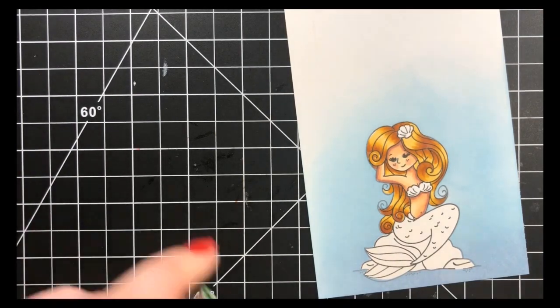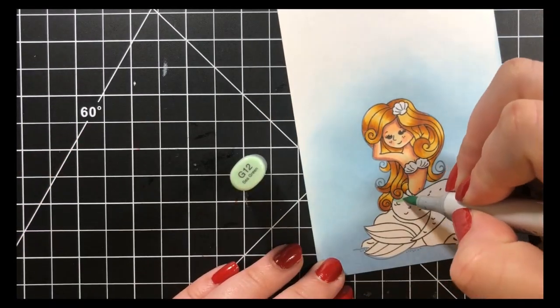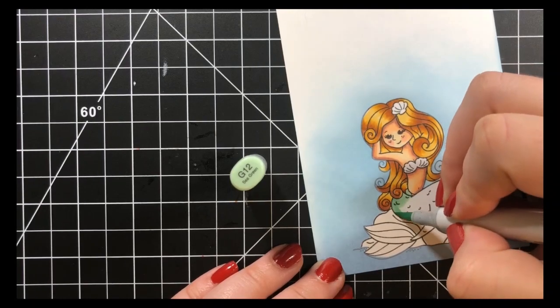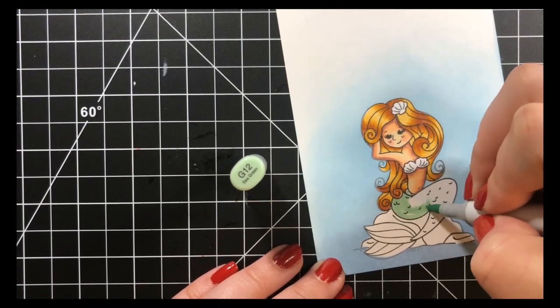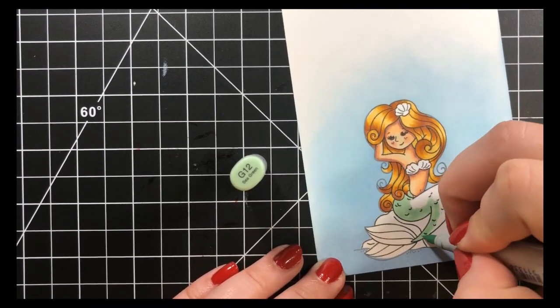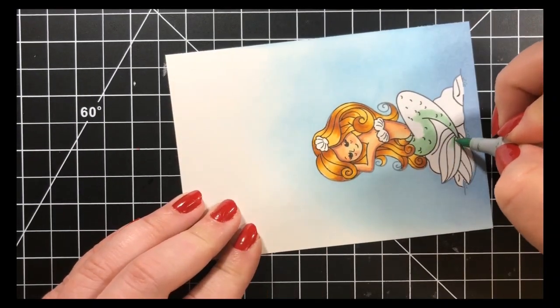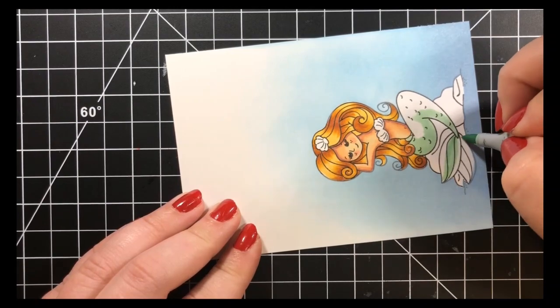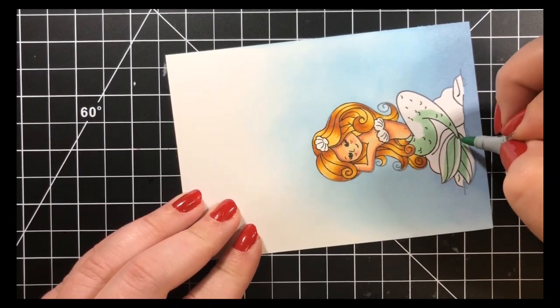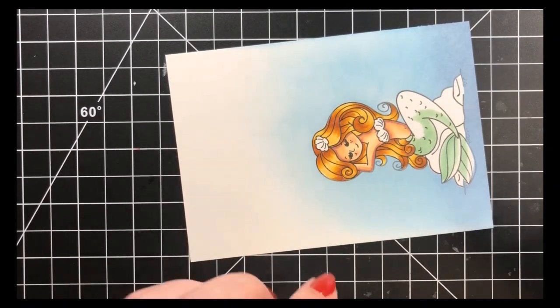Next, I will move on to her tail. Now, I'm switching up the colors here quite a bit. So, I'm starting with my G12 and I'm laying out where my darkest areas will be for my greens. I'm also going to be bringing in some BG markers here. So, this is going to be the darkest area for my green markers.